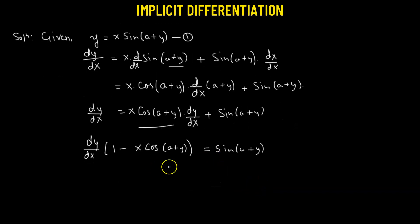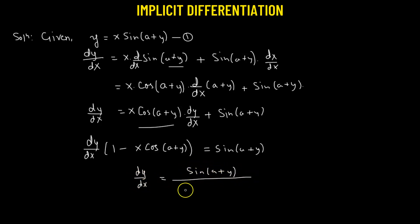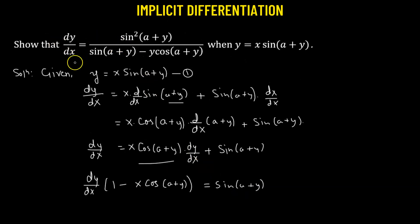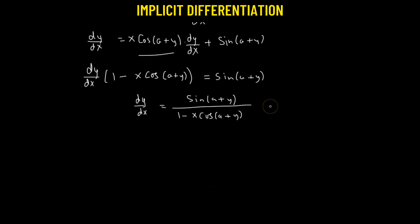This gives us dy/dx equals sine(a + y) divided by (1 − x·sin(a + y)). So we have obtained dy/dx. However, if we look at the required expression, we need sin²(a + y) in the numerator. So we'll multiply both numerator and denominator by sin(a + y) to get sin²(a + y) in the numerator.